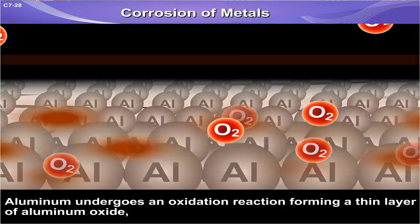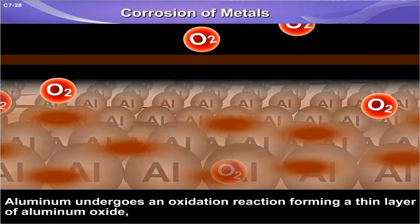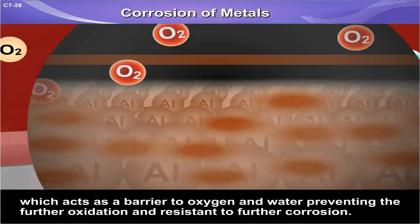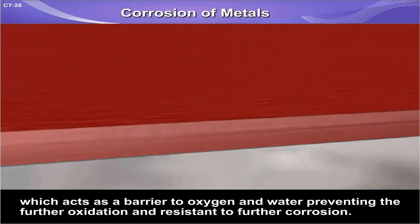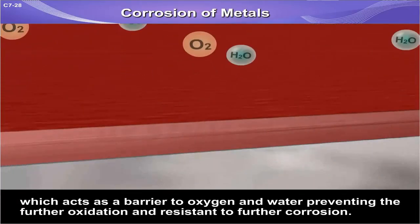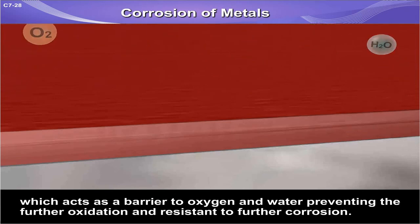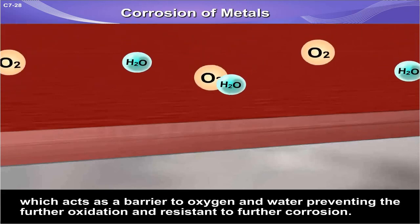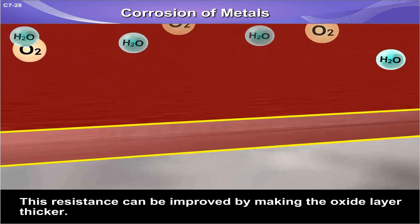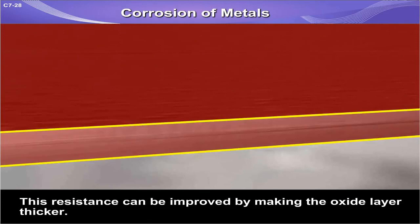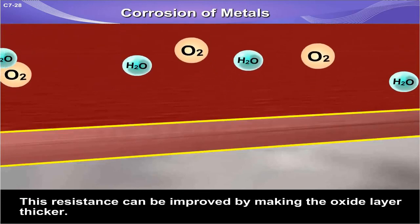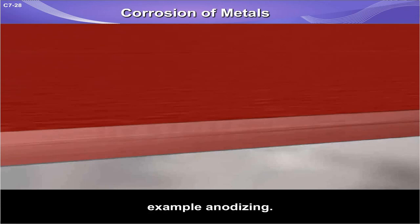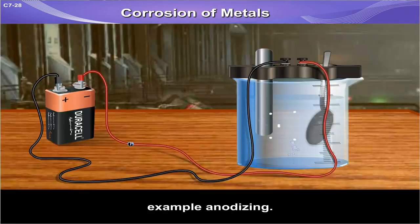Aluminium undergoes an oxidation reaction, forming a thin layer of aluminium oxide which acts as a barrier to oxygen and water, preventing further oxidation and making it resistant to further corrosion. This resistance can be improved by making the oxide layer thicker, for example through anodizing.